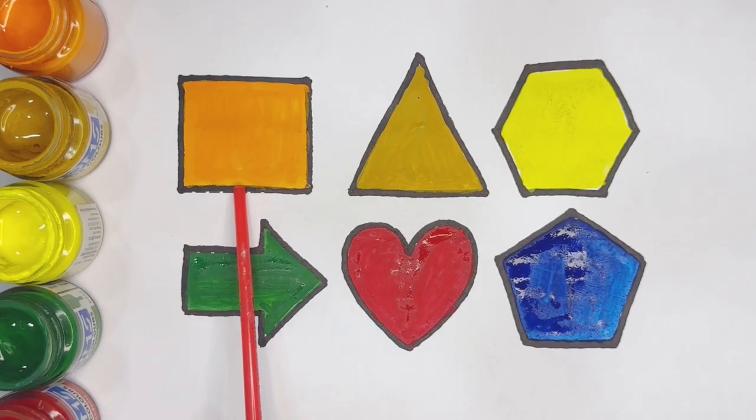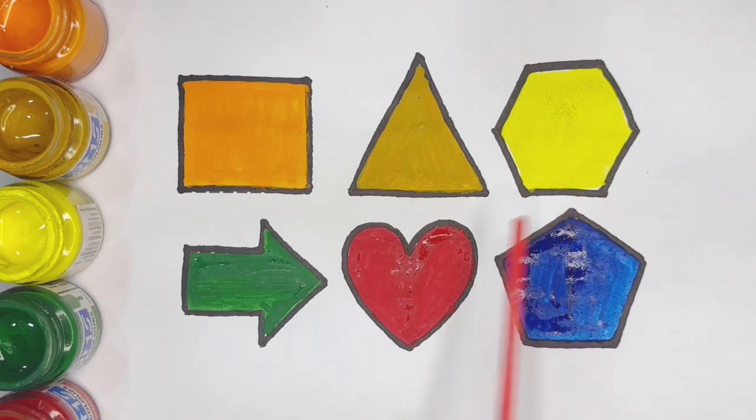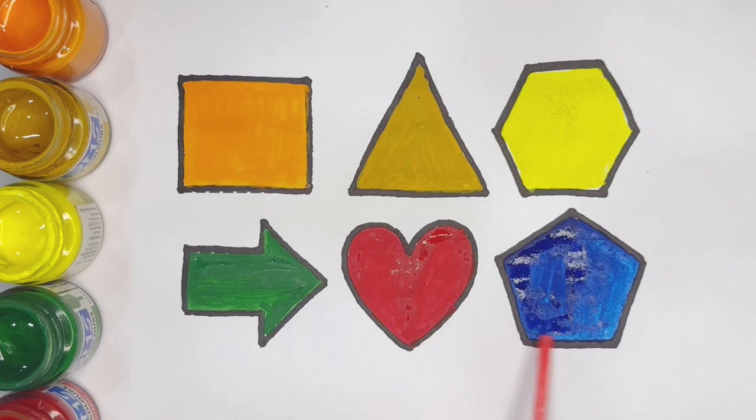Square, orange color. Triangle, golden color. Hexagon, yellow color. Arrow, dark green color. Heart, red color. Pentagon, blue color.